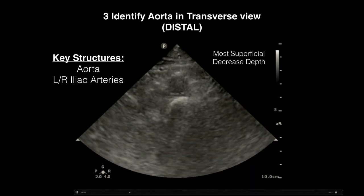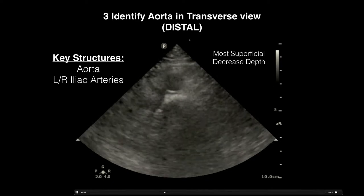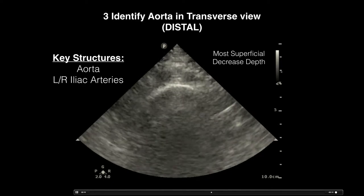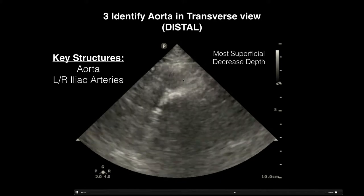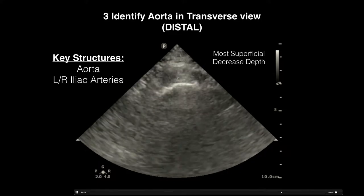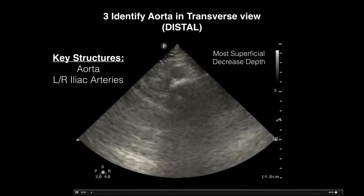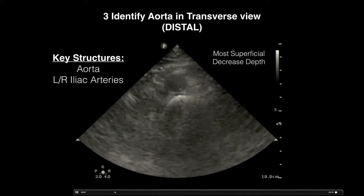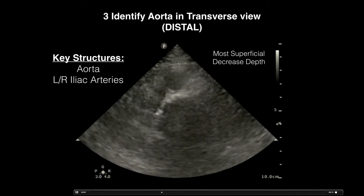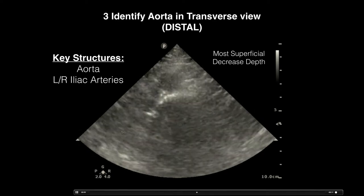The third view is the transverse view of the distal aorta, which is very superficial — only about two to three centimeters deep. Once you have scanned this area, you can actually see the aorta bifurcate into the right and left iliac arteries. Make sure that the iliac arteries are less than 1.5 centimeters.